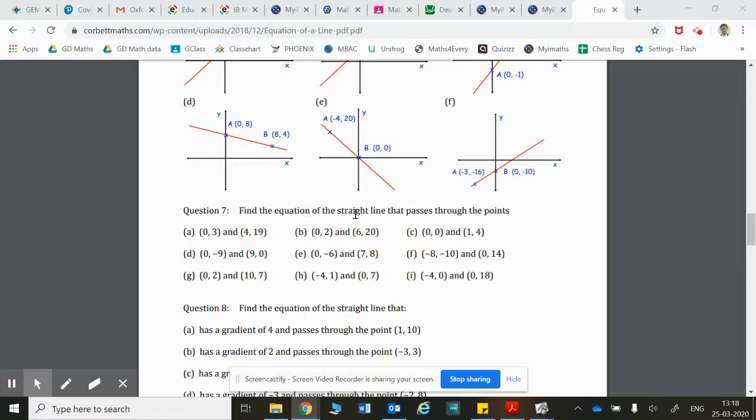So 7D says find the equation of a straight line that passes through the points zero minus seven and nine comma zero.